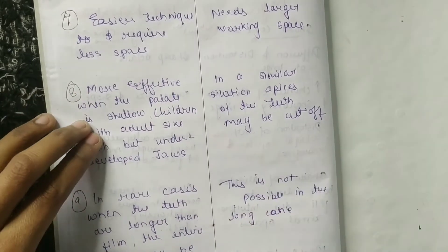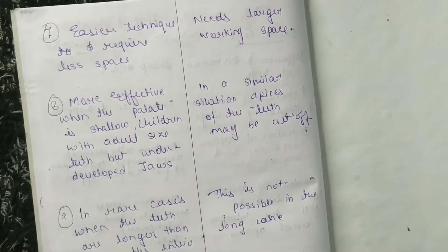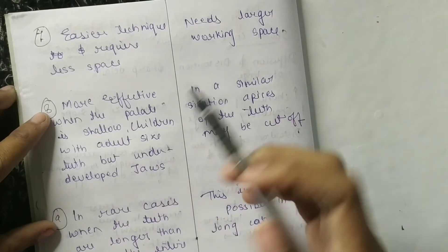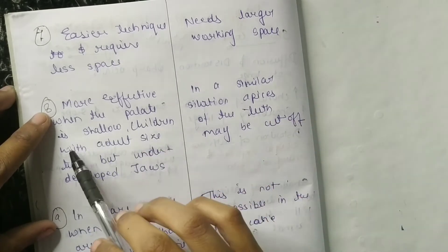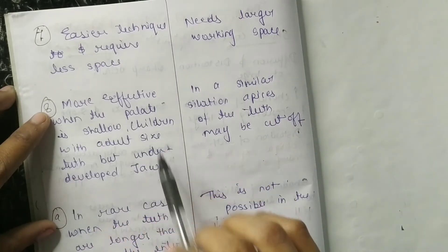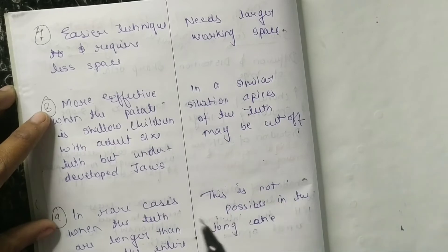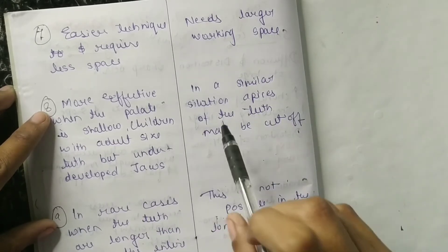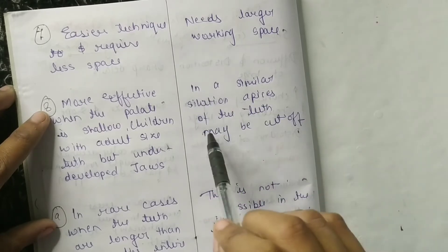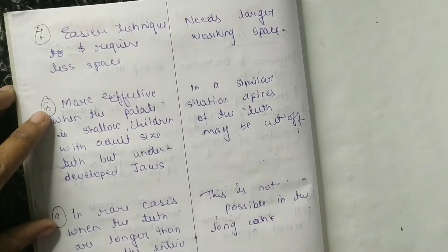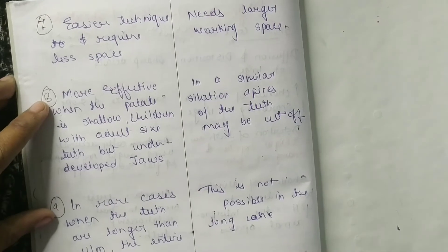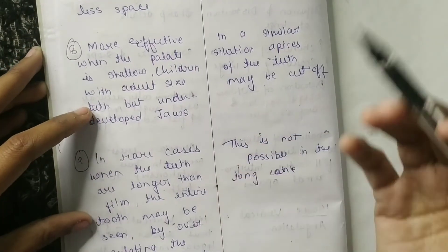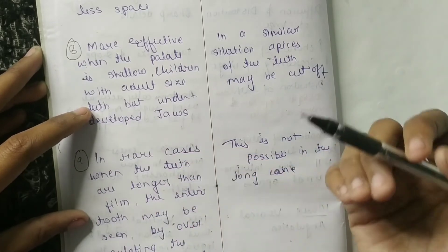The eighth difference: short cone is more effective when the palate is shallow, or in children with adult-size teeth but underdeveloped jaws. In long cone, in a similar situation, the apex of the teeth may be cut off — this is a disadvantage of the long cone technique. Knowing these differences, you can also identify the advantages and disadvantages of each technique.